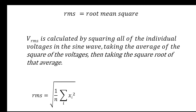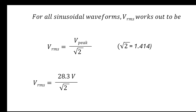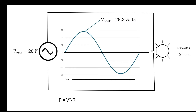For any sine wave form of voltage, the RMS voltage is calculated by taking the peak voltage and dividing by the square root of 2, and the square root of 2 equals 1.414. From our example, we had a peak voltage of 28.3. Dividing by the square root of 2, or 1.414, we get 20 volts. That 20 volts is the RMS voltage. Using that in our power equation — 20 squared divided by 10 — we get 40 watts, which is exactly what we had in our DC circuit. That's the importance of RMS voltage: it gives us a voltage comparable to a DC circuit.